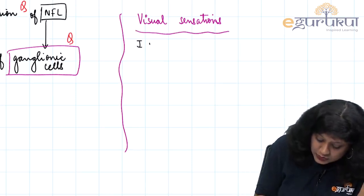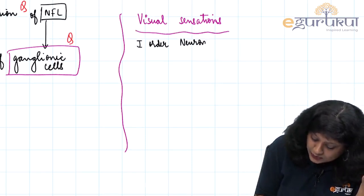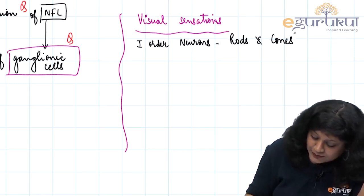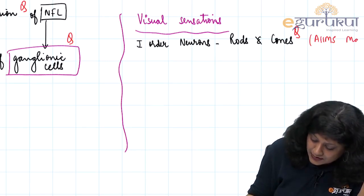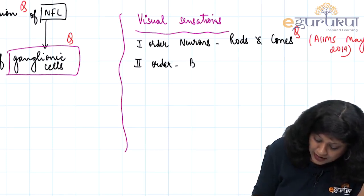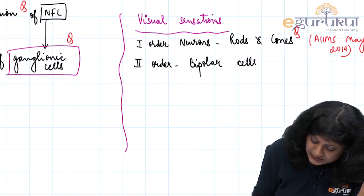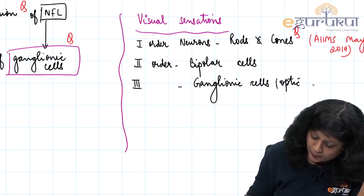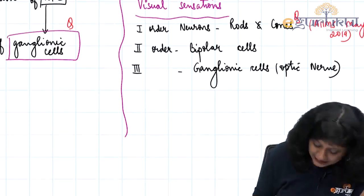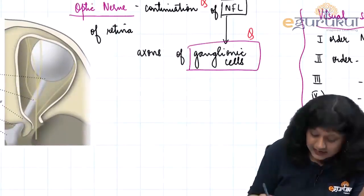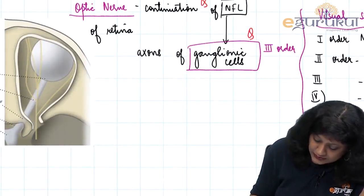The first order neurons are now the rods and cones, that is the photoreceptors — this question was also asked in AIIMS May 2019. The second order neurons are the bipolar cells. Third order neurons are the ganglionic cells, which are present in the optic nerve. Finally, we have the fourth order neurons which are present in the lateral geniculate body. So the ganglionic cells are actually the third order neurons.